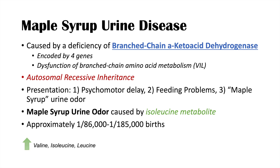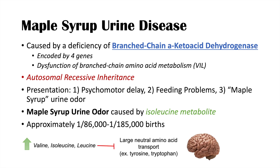Because there is a dysfunction in branched-chain amino acid metabolism, we get an increase in the concentration of valine, isoleucine, and leucine. This increase in branched-chain amino acids leads to inhibition of the uptake and transport of large neutral amino acids into the brain itself.